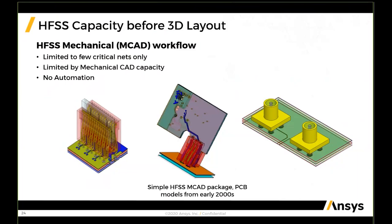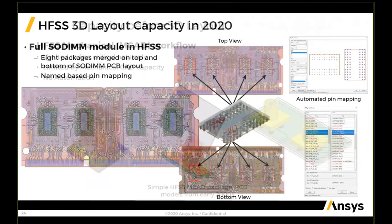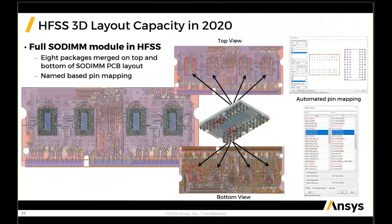What's very common to many of these older models — you can identify one, maybe two differential pairs, or in the examples to the left, three very short and simple differential trace routings. This was HFSS capacity before 3D layout. We are in 2020 today, and this is HFSS 3D layout capacity today.